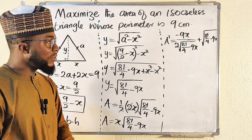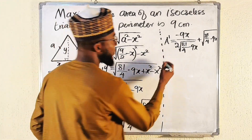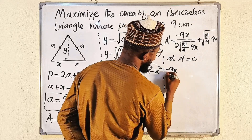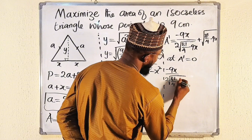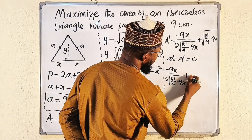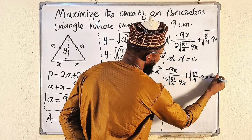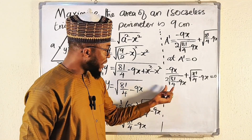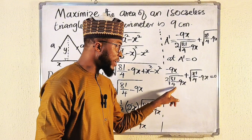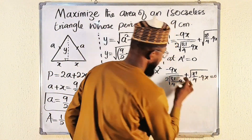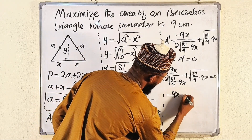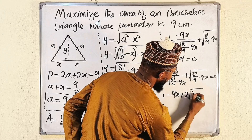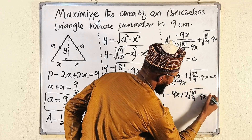To find the critical point, we set A′ = 0. So: −9x / (2√(81/4 − 9x)) + √(81/4 − 9x) = 0. To clear the fraction, multiply every term by 2√(81/4 − 9x). The first term becomes −9x, and the second term becomes 2(81/4 − 9x).